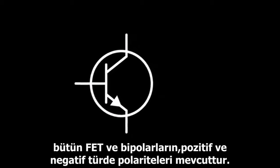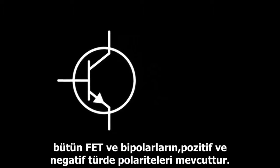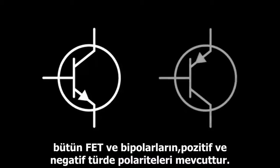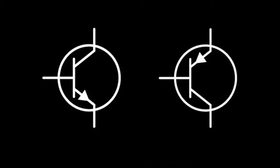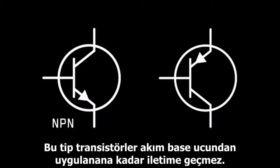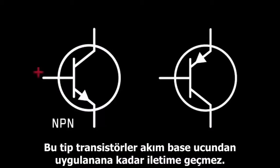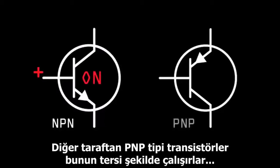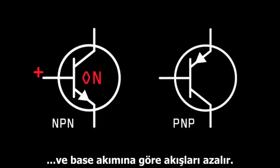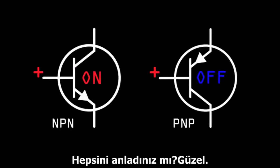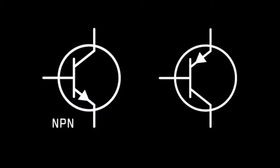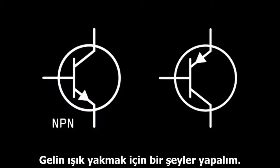Just to make things a little more interesting, both FETs and bipolars are available in positive and negative type polarities. An NPN bipolar is like a switch which is normally open — it won't conduct until a current is applied at its base terminal. PNP types, on the other hand, act in the opposite way. They reduce the flow in relation to their base current. Got all that? Good.